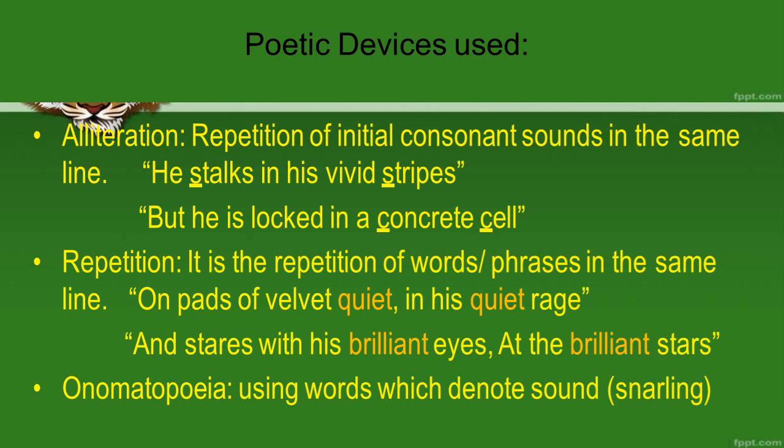Now let's discuss some important poetic devices used in this poem. The first one is alliteration — whenever we see repetition of initial consonant sounds in the same line, alliteration has been used. For example: 'He stalks in his vivid stripes' — 'stalks' and 'stripes' both begin with the 'S' consonant sound. Another example: 'locked in a concrete cell' — 'concrete' and 'cell' both begin with the 'C' consonant sound.